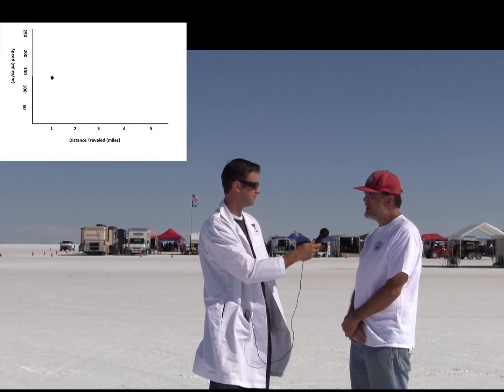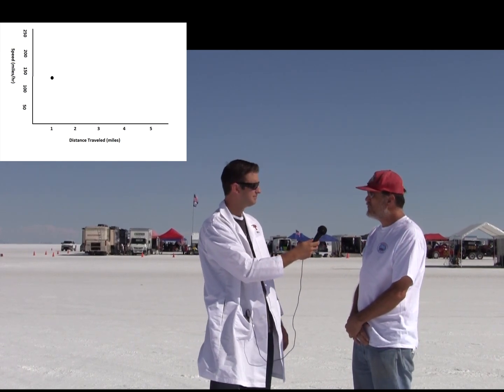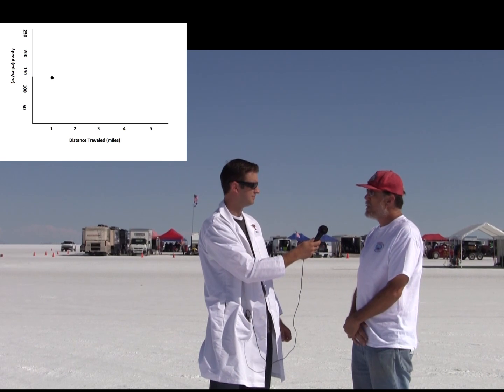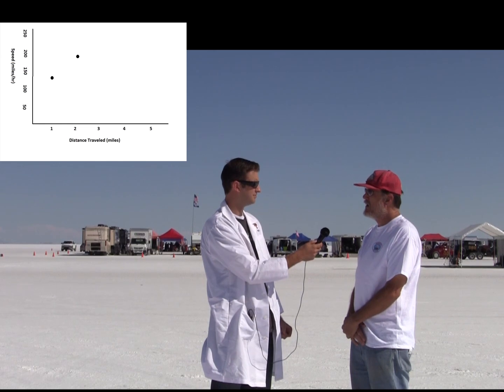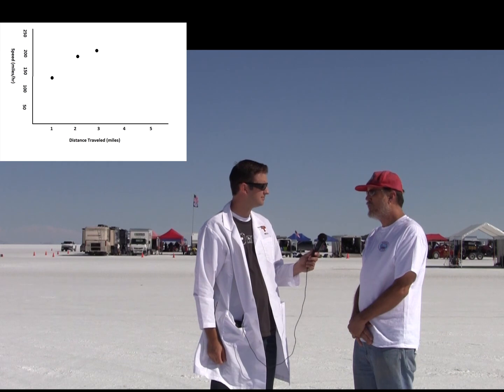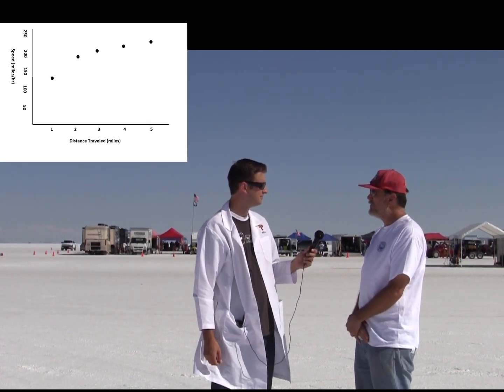So, talk to me about what the speeds are like as you're going down the track. How fast are you going in the first mile, the second mile, all the way through the track? When I was making my run, I was probably going about 140 after the first mile. The next speed is measured at the 2¼ mile, and I was doing about 190. At the 3 mile, I was doing 208. At the 4 mile, 215. And at the 5 mile, 224.